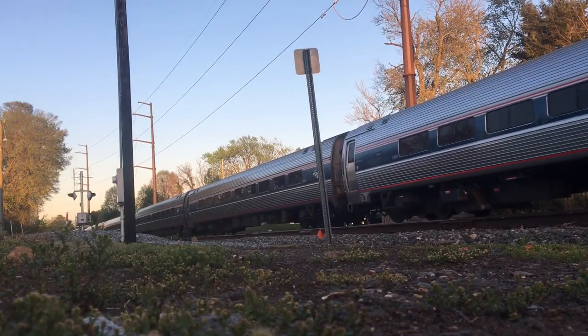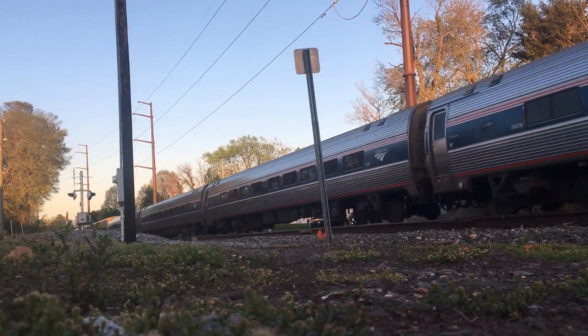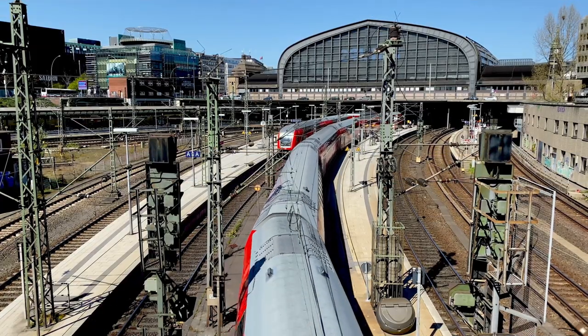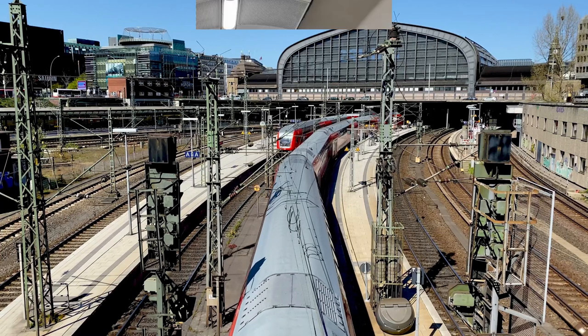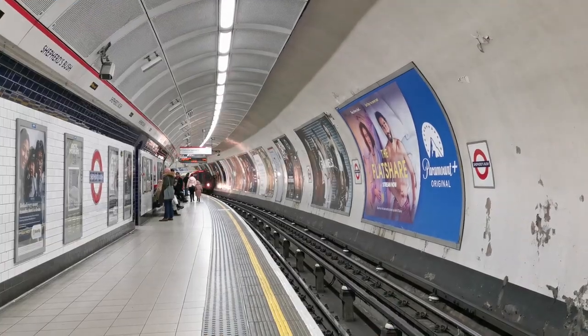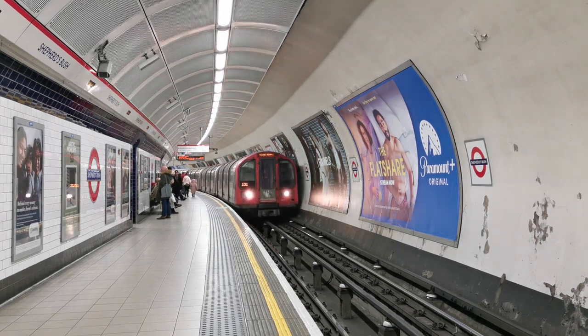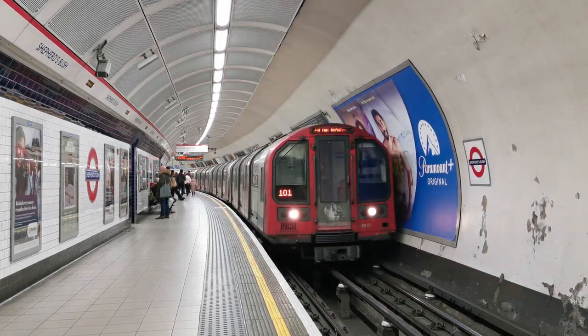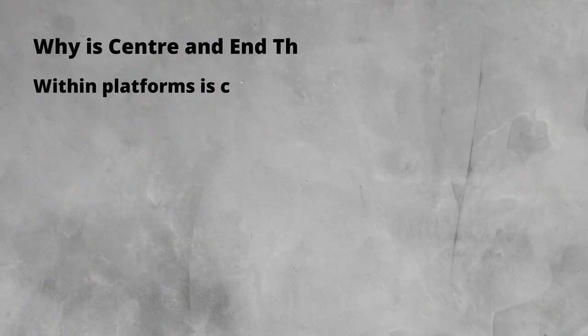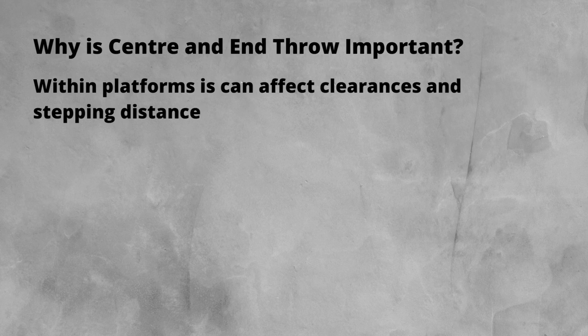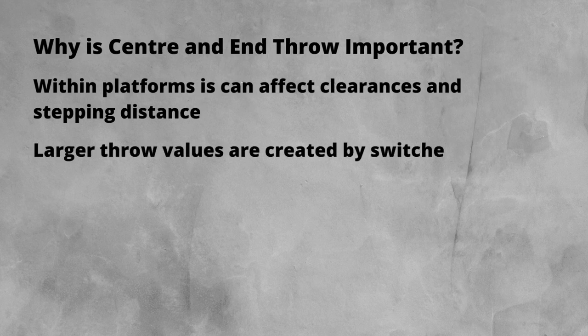But why is this important? It is important because of the proximity of the track to some structures, and also the fact that these throw values tend to be awkward to deal with. Take a platform on a curve, for example. The clearance to the edge of the coping stone has to take into account the end throw if it's on the outside of a curve. If it's on the inside of the curve, centre throw becomes the issue. In both these cases, the gap the passengers have to step across to board the train can become an issue, increasing the risk of someone falling. If the station has switches within the platform, you may see a notch cut out of the platform — this is there to accommodate the end throw.